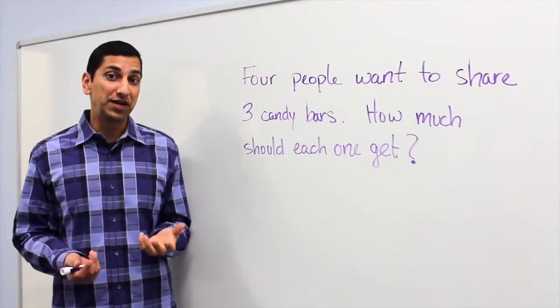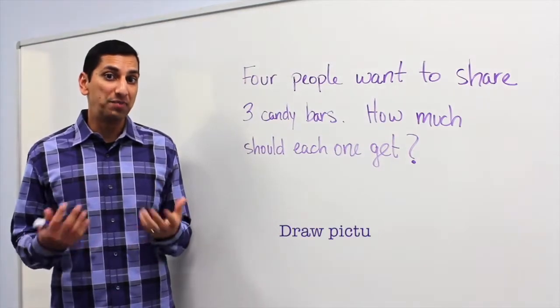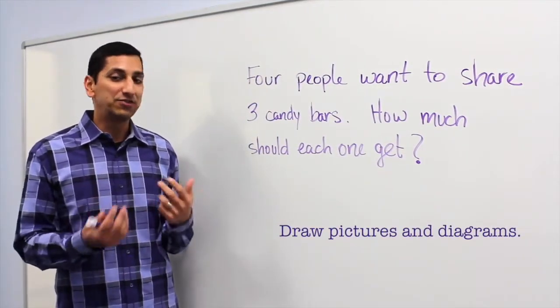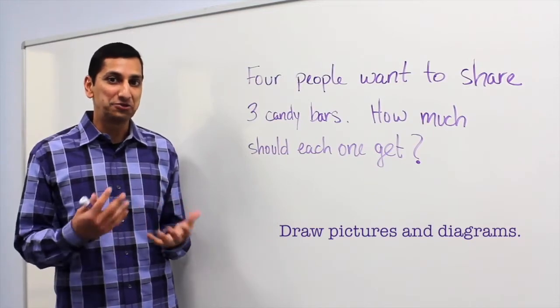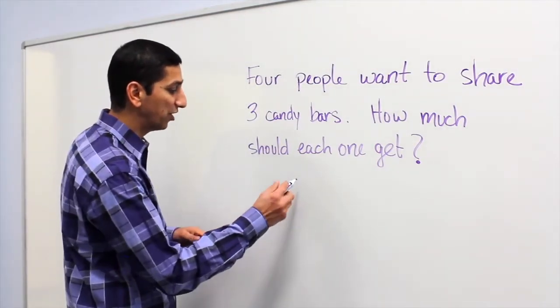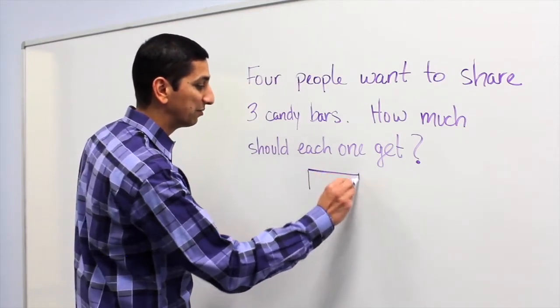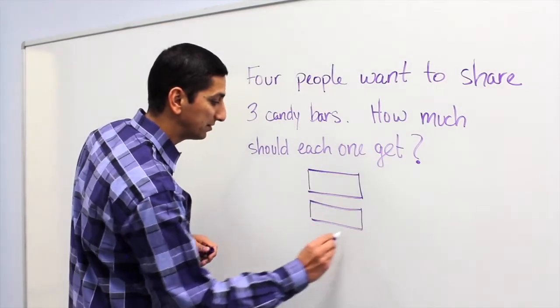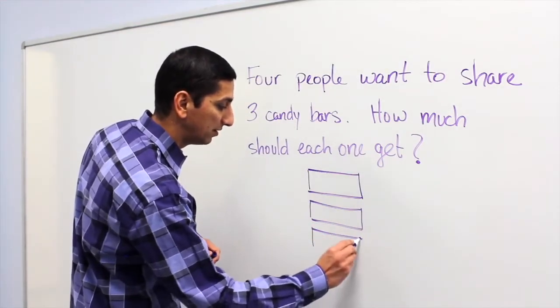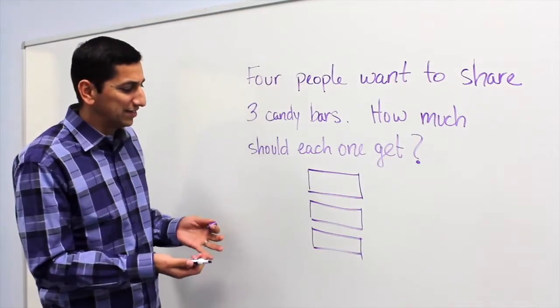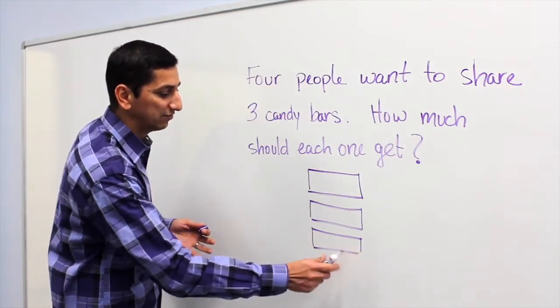So one really good strategy for this is to draw a picture. What does this even look like? A lot of times kids try and do things very abstractly and then they lose track of what's going on. So let's draw a picture. I'm just going to draw a candy bar as if it were a bar like this. We're going to assume all the candy bars are the same size. And then how can I divide this into four people? That's kind of confusing.